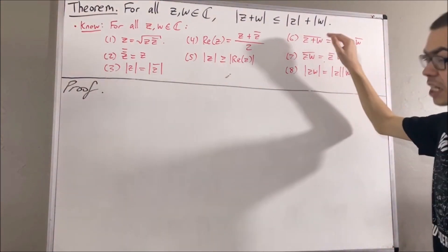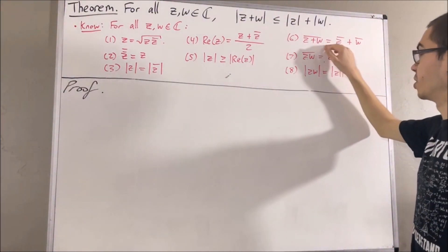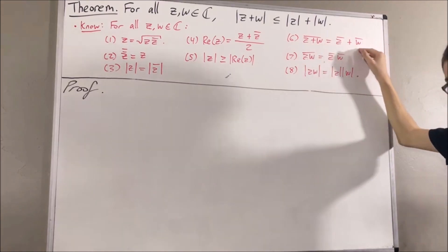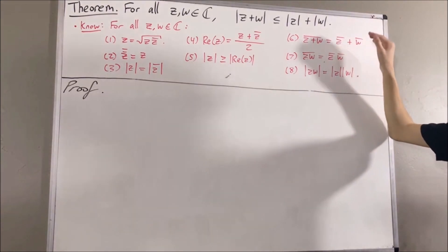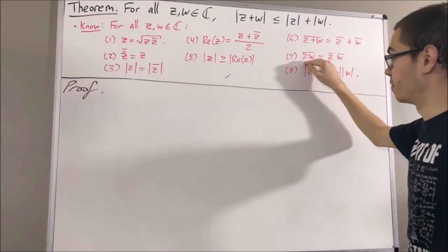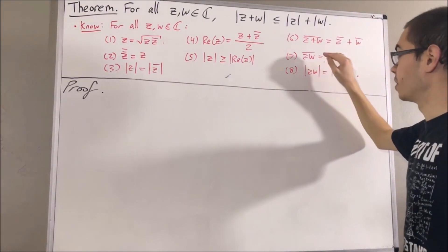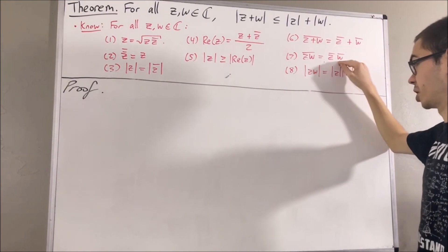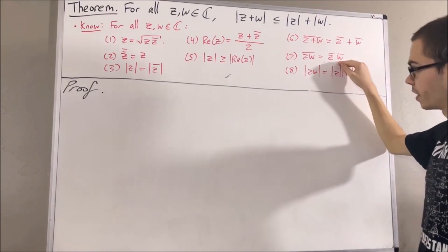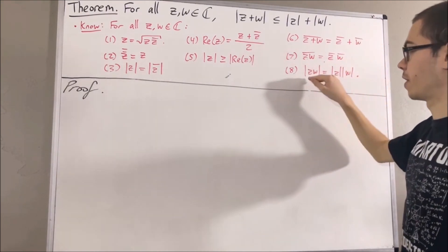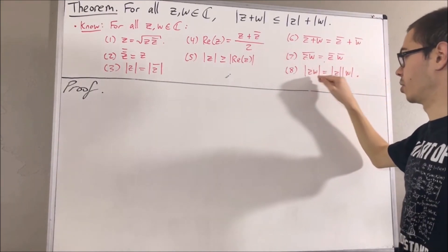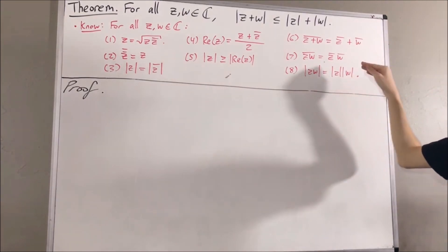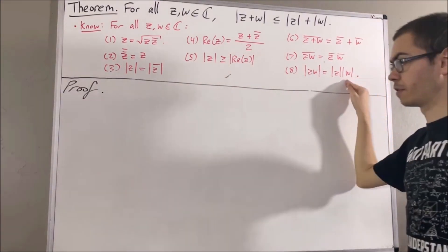Sixth, the conjugate of z plus w equals the conjugate of z plus the conjugate of w. Seventh, the conjugate of z times w equals the conjugate of z times the conjugate of w. And eighth, the absolute value of z times w equals the absolute value of z times the absolute value of w.